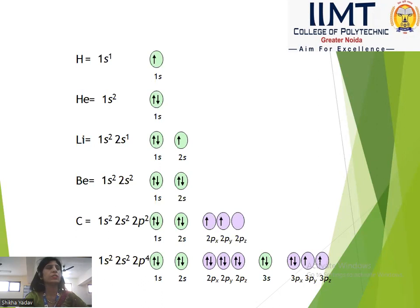Repeating the series: 1s, 2s, 2p, 3s, 3p, 4s, 3d, 4p, 5s. This is the order in which electrons fill the orbitals according to the Aufbau Principle.